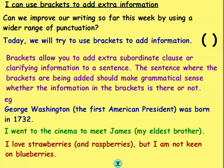For example: 'George Washington (the first American president) was born in 1732.' I've put brackets around 'the first American president' because that's further information about George Washington. Next: 'I went to the cinema to meet James (my eldest brother).' I've used brackets around 'my eldest brother' — that's extra information about James. And finally: 'I love strawberries (and raspberries) but I am not keen on blueberries.' I've added the extra information 'and raspberries' in brackets.